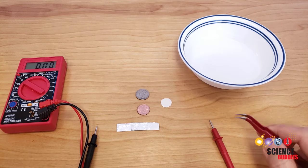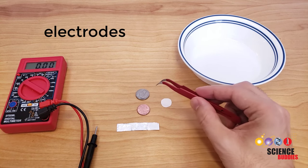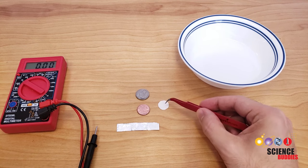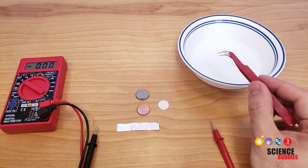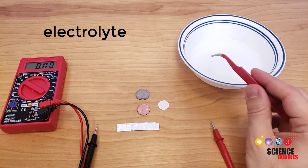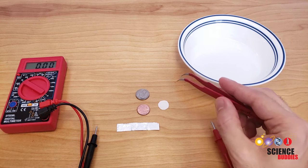To get started building your battery, take one penny and one nickel. These will form the metal electrodes of your battery. Also take one paper circle. You're going to dip this in the salt and vinegar solution, which will form your battery's electrolyte. It's the electrochemical reaction that occurs when you combine these materials that generates electricity.